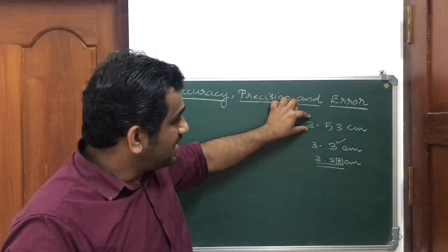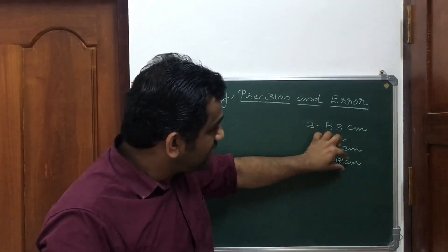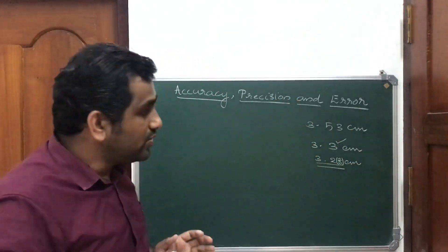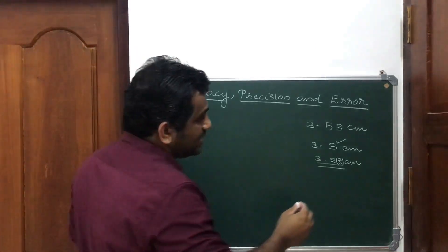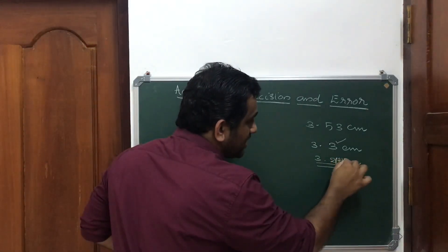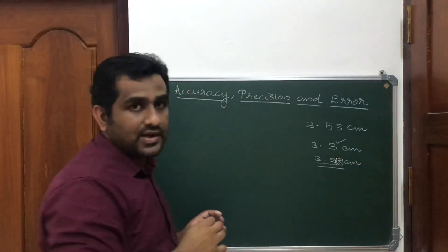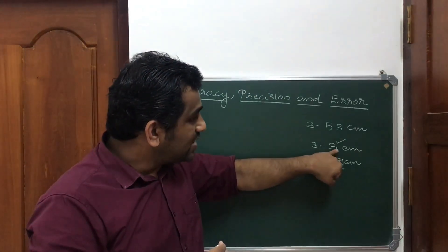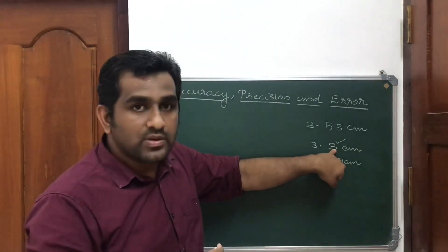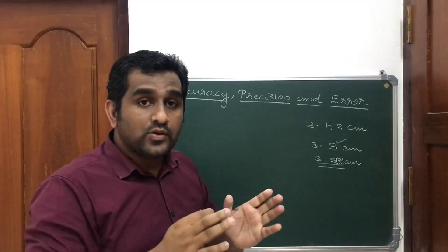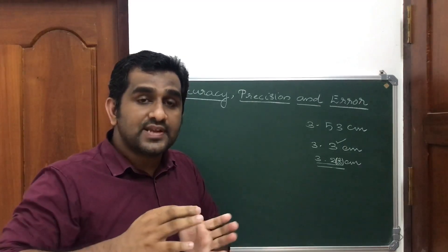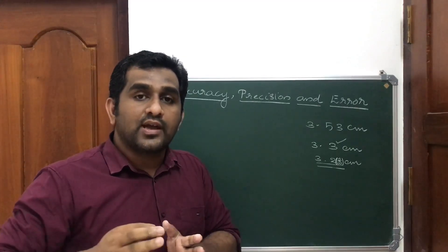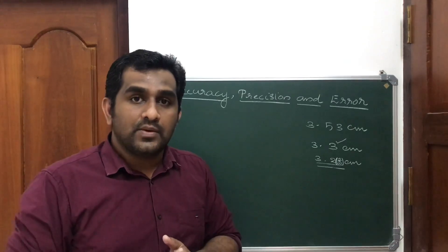The value 3.28 cm is precise because this is a measured value in the second decimal place. Whether a value is both precise and accurate depends on how close it is to the true value.